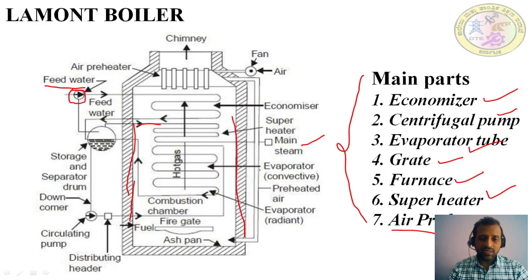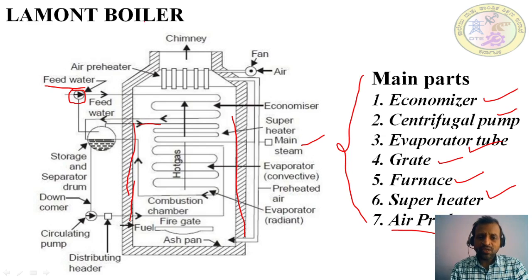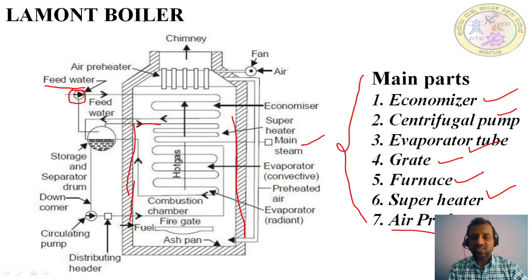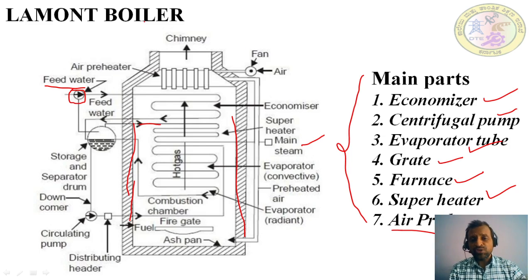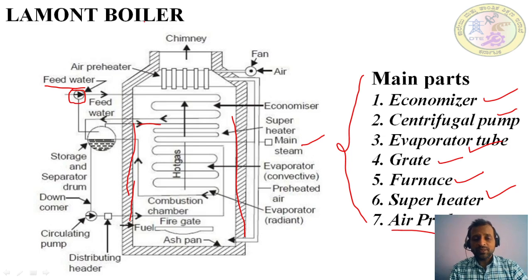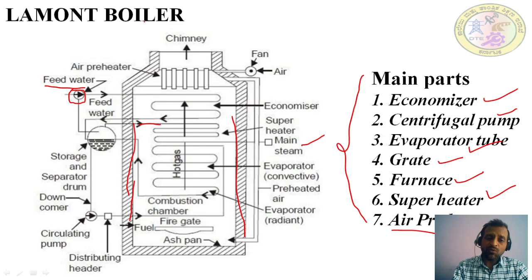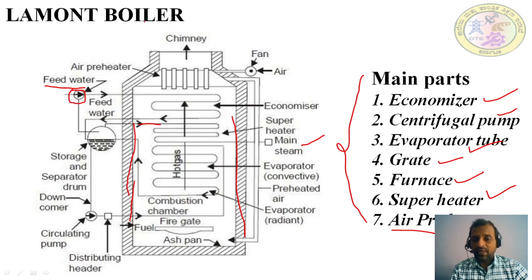This is the working of the Lamont boiler. The key concept to understand is that in low pressure boilers, water enters naturally — natural convection takes place. But in high pressure boilers, water is forced using a pump — forced circulation. Whenever you use the pump, it sends water at high pressure into the boiler. This is the very important difference between low pressure and high pressure boilers.